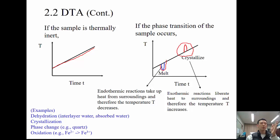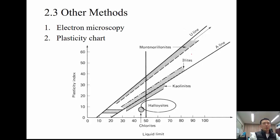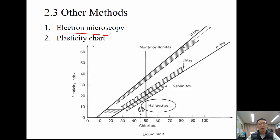Another method is examining the fabric or shape of the mineral under a microscope: kaolinite is platy, montmorillonite is film-like, and illite is flaky. You can also use the Casagrande plasticity chart — by performing liquid limit and plastic limit tests and plotting the results, you can get a rough idea of the main clay mineralogy.